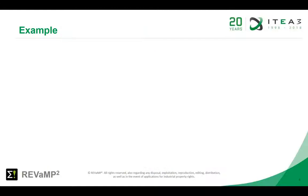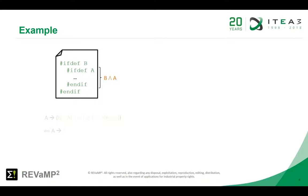Here we demonstrate how the approach works. We want to compute the precondition for the selection of feature A. Feature A appears only nested inside another feature B. As a result we obtain the presence condition A and B. In this formula we set A to true and A to false and combine both versions with an XOR. The resulting formula contains only B and shows that A has only an effect if B was selected before, because A is nested inside a preprocessor block which is controlled by B.